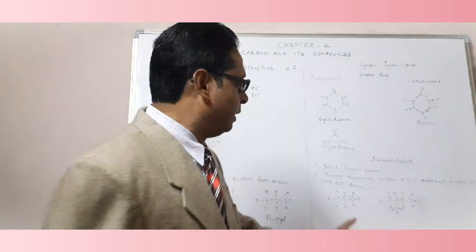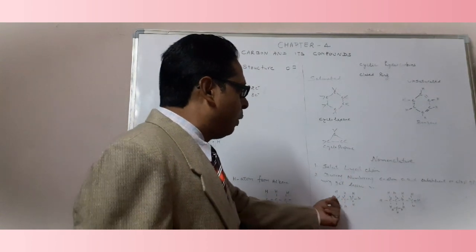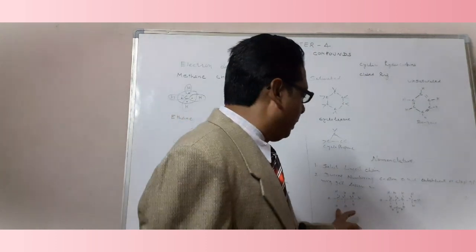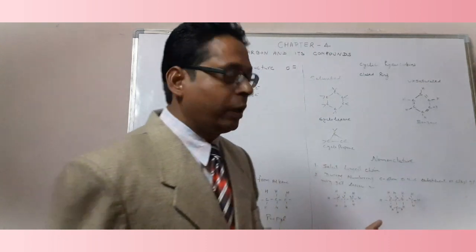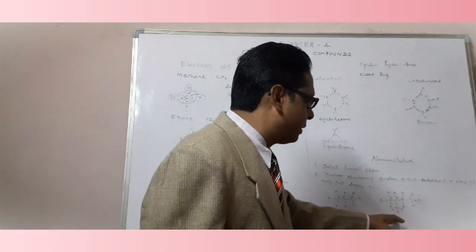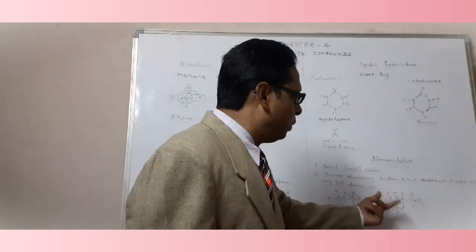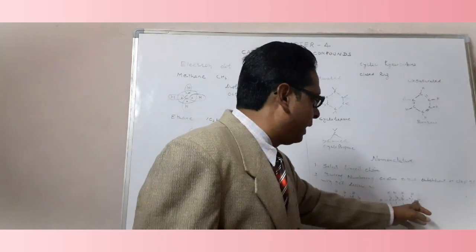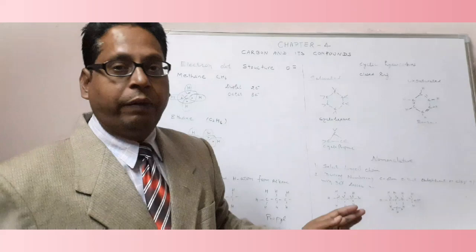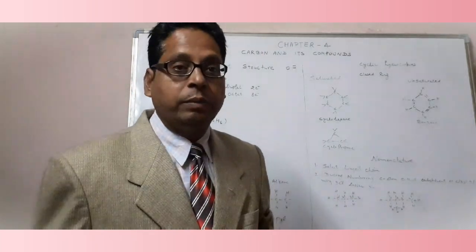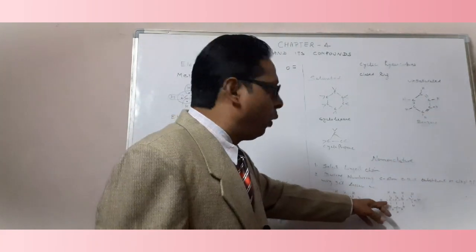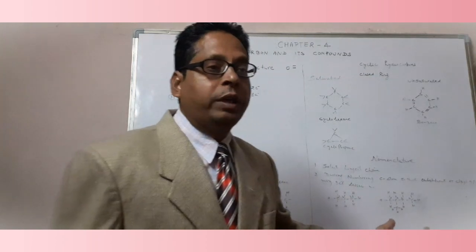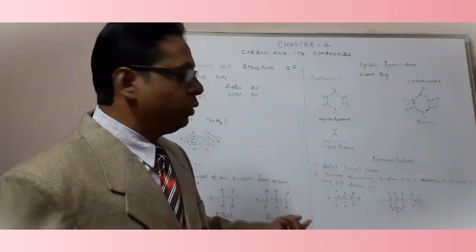For example, three carbon atoms give propane, and we can number from either side: one, two, three. In a second example with four carbon atoms and a methyl group attached, we must number from the side that gives the methyl group the lower number. Starting from the other side would give it a higher number, which is not correct. We always number so that any substituent group gets the lesser number.